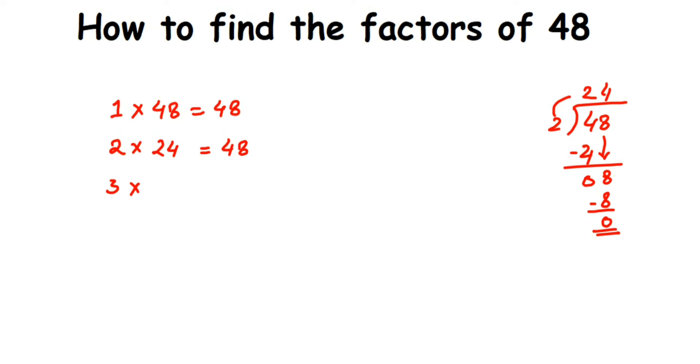So 3 into 4 is 3, 1 is a remainder. Drop this 8. 3 into 18 is 6. So final remainder is 0. This means that yes, 48 goes in 3 table.